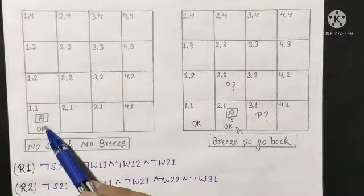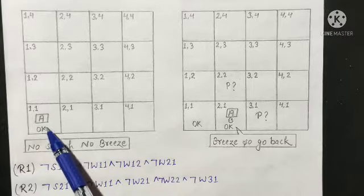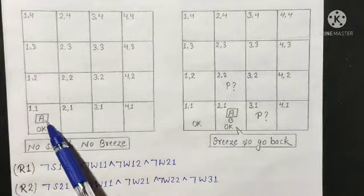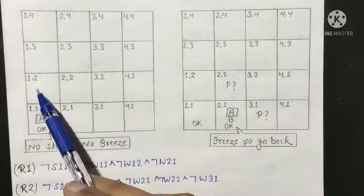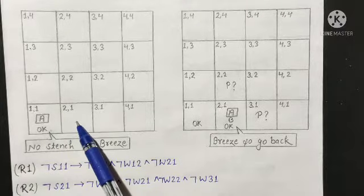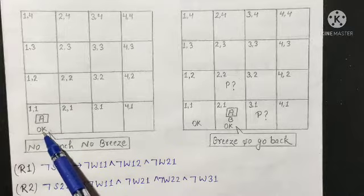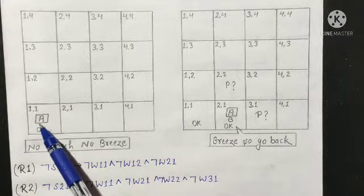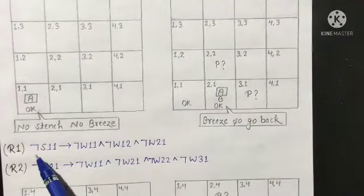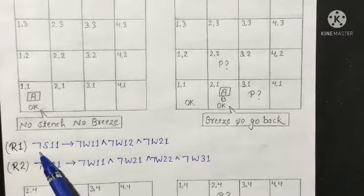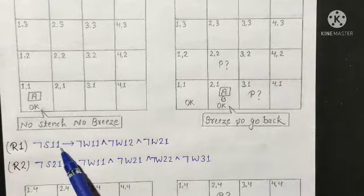Here A stands for agent. We can see there is no stench and no breeze in room 1,1. This implies that there is no Wumpus in room 1,2 and there is no Wumpus in room 2,1, because there is no stench in room 1,1. That's why I have written negation of S11 — meaning there is no stench in room 1,1.